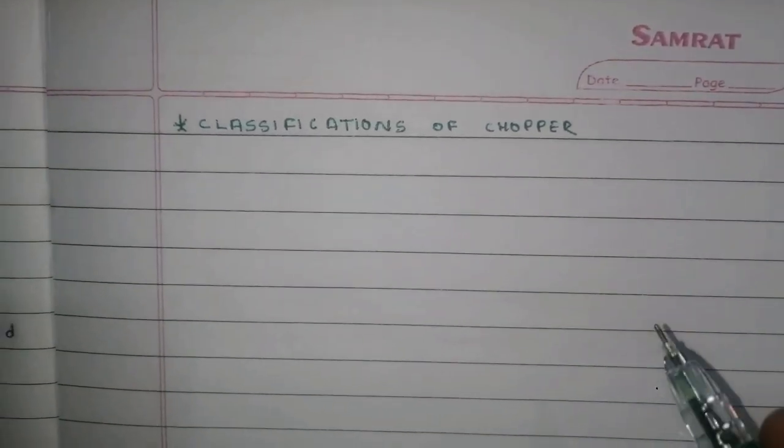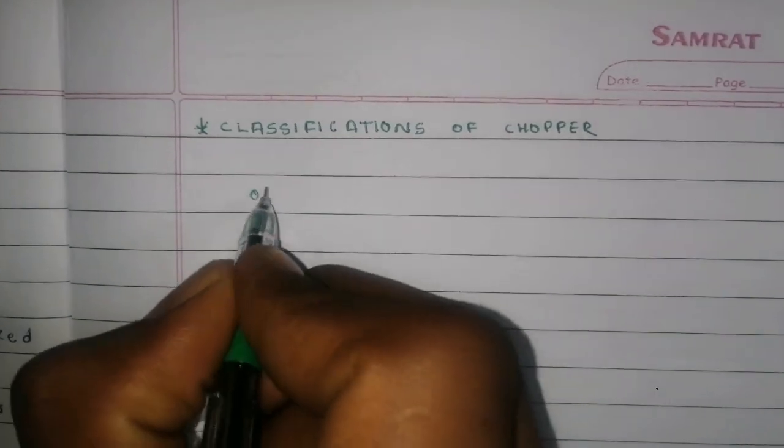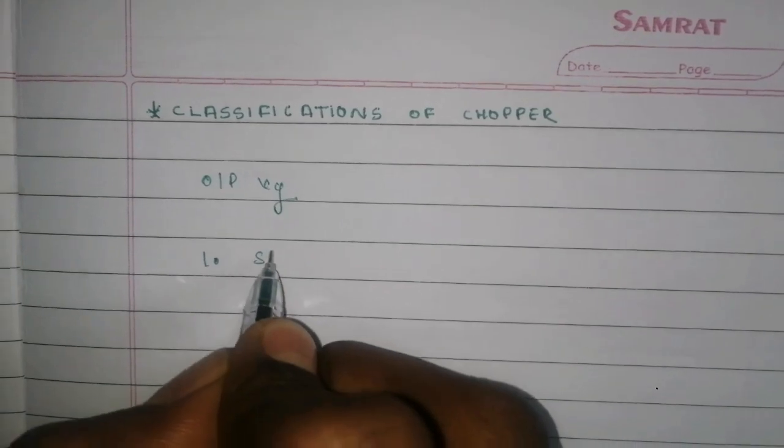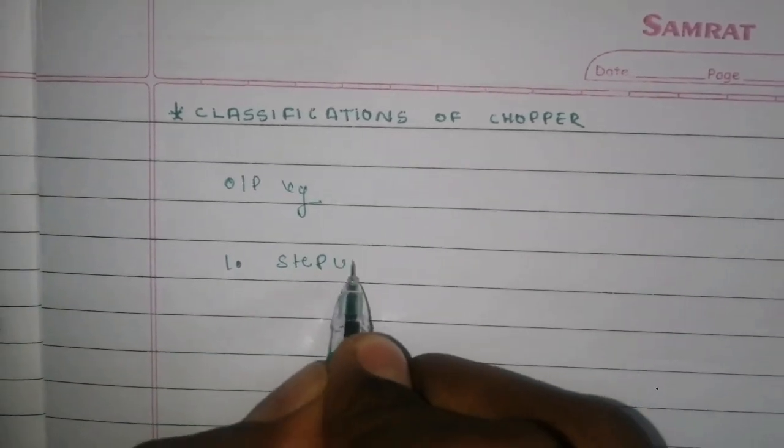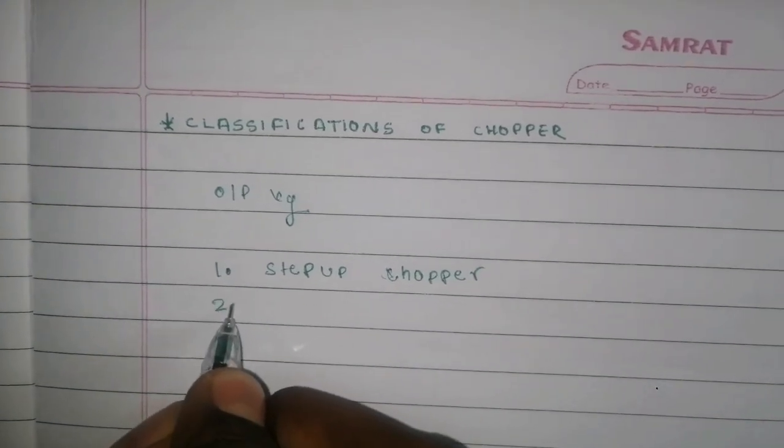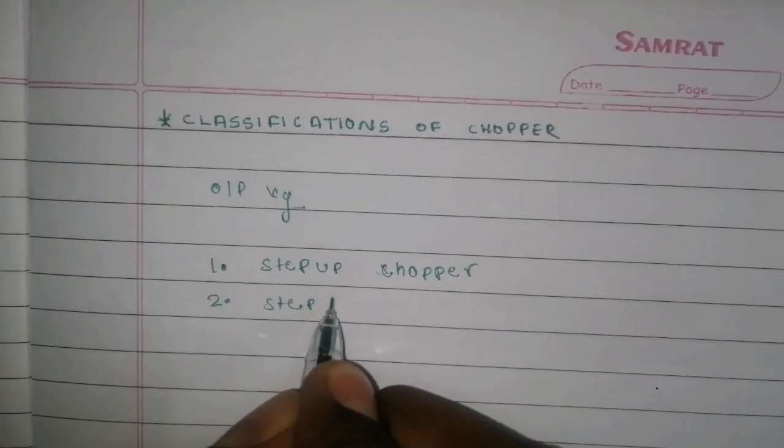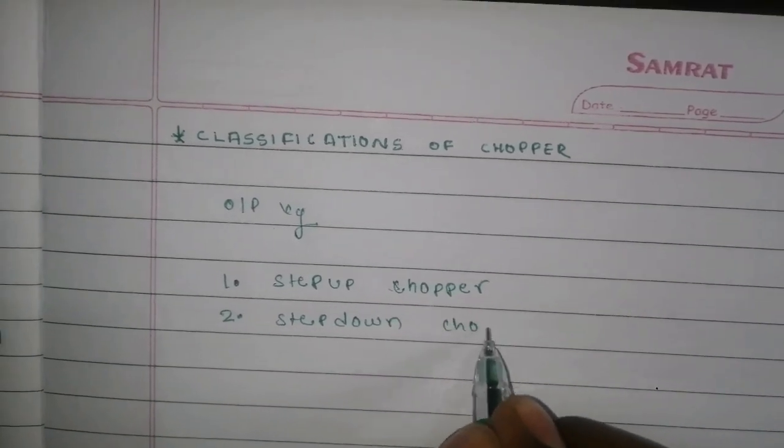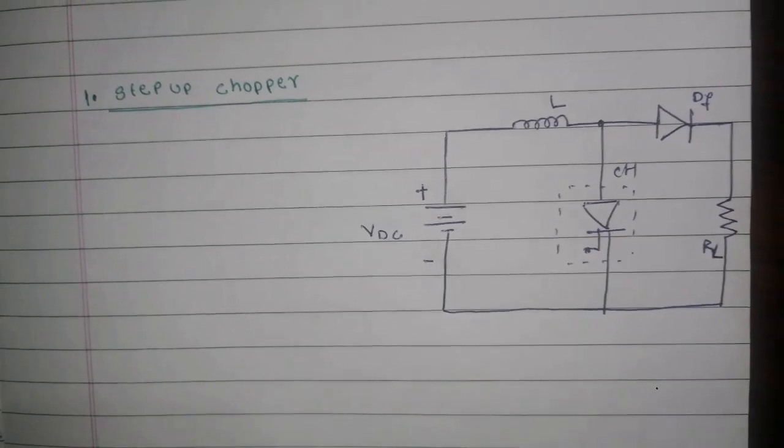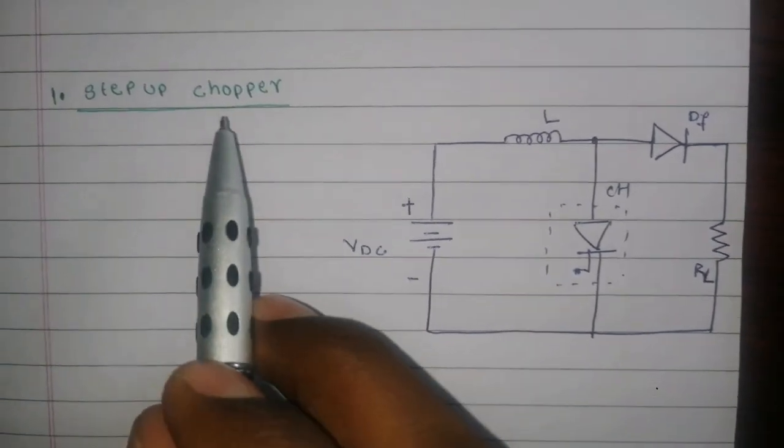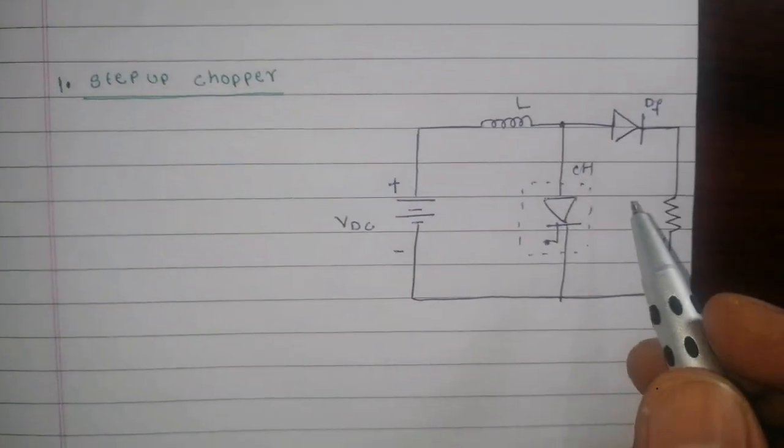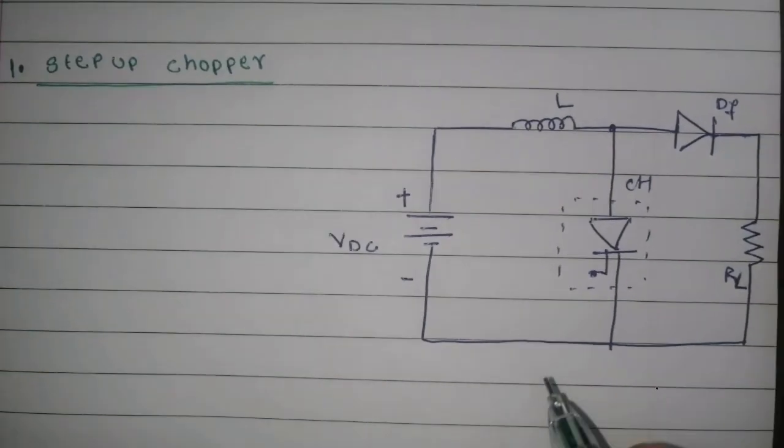The choppers are classified into two types based on output voltage. First one is step-up chopper, second one is step-down chopper. Now I will explain step-up chopper with the help of this circuit.